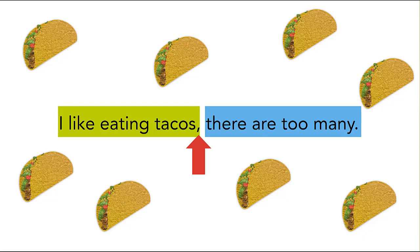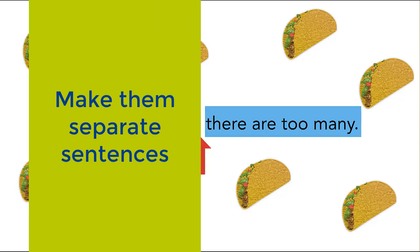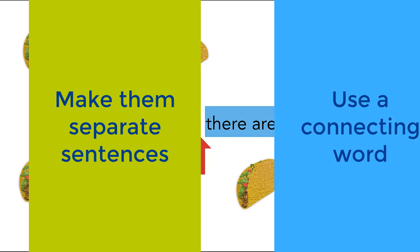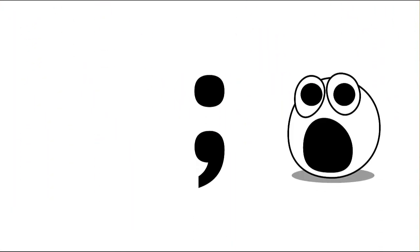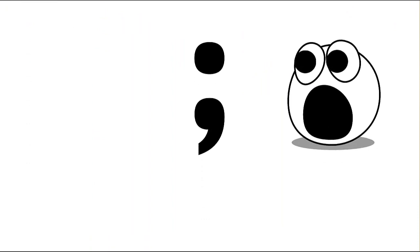So the good news is, there's an easy fix for this too. Either just make those two things separate sentences, as long as they make sense that way, or add a little connecting word, like and or but. If you're feeling super adventurous, you might use a semicolon, but maybe we'll just focus on the first two fixes.